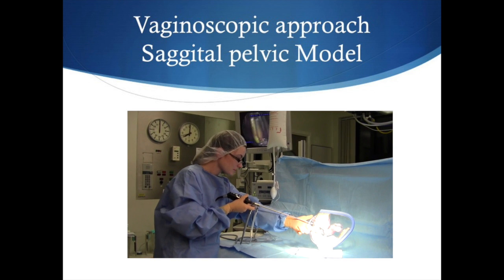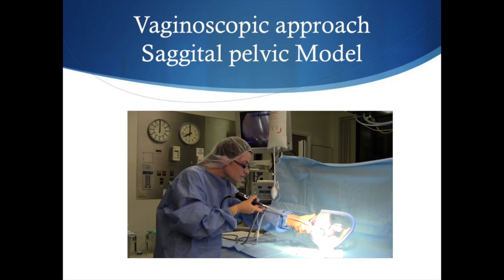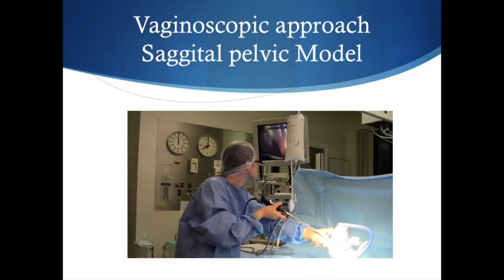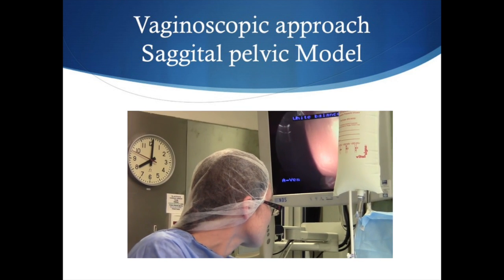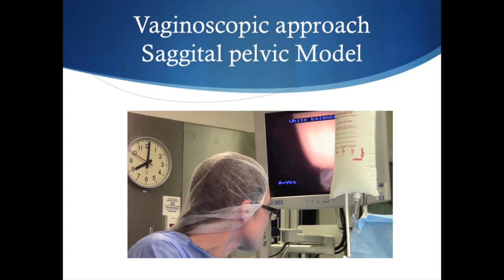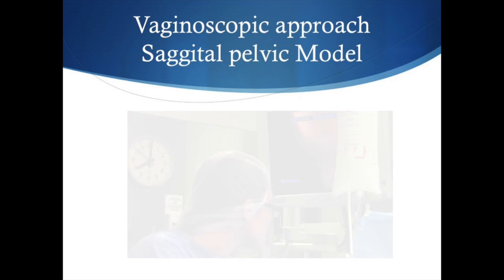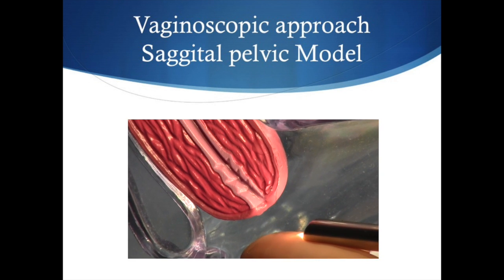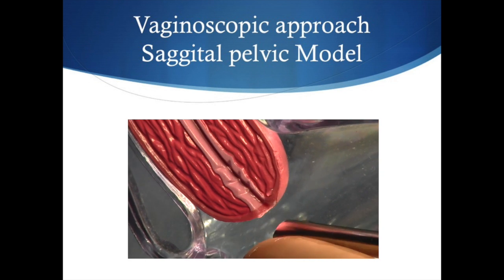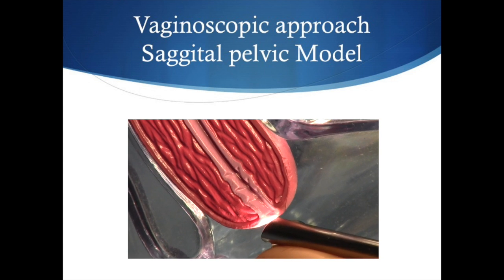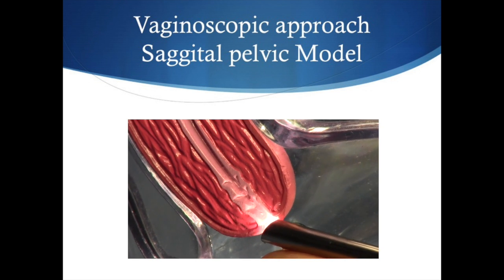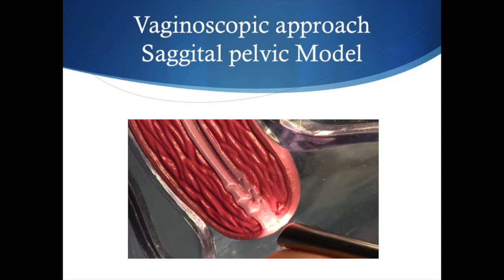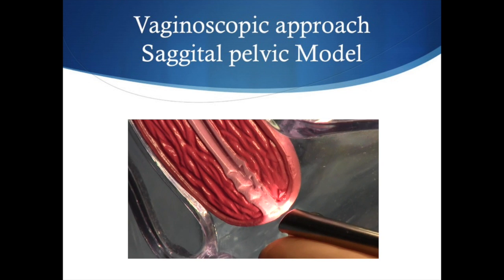Alternatively, the index finger can be inserted into the vagina to identify the cervix and the cervical os. Using the index finger, the hysteroscope can be introduced via the external os of the cervix into the endocervical canal.